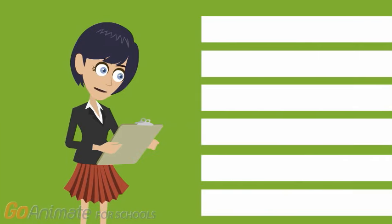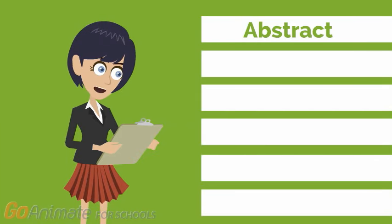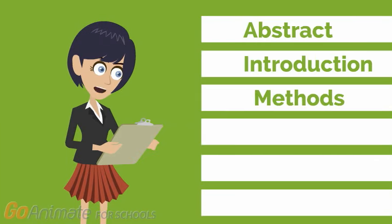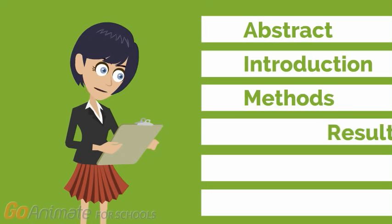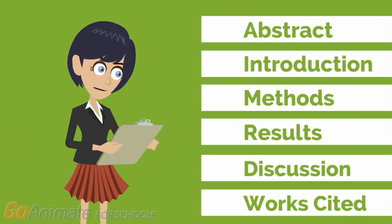Scientific studies are usually made up of these most common sections: Abstract, Introduction, Methods, Results, Discussion, and Works Cited.